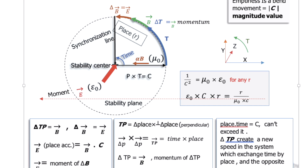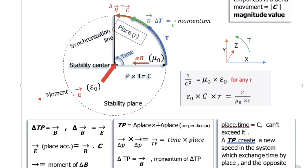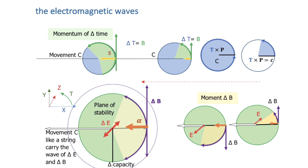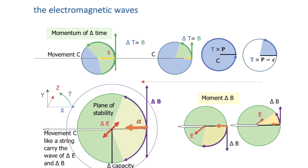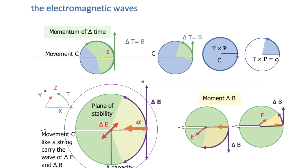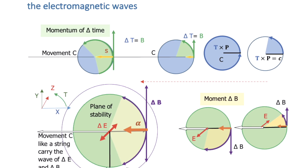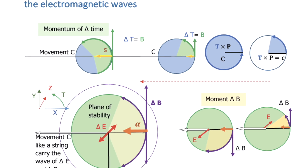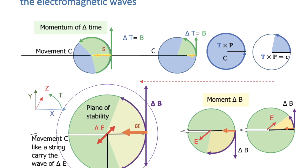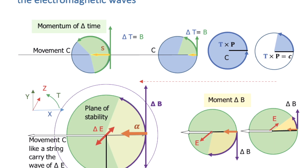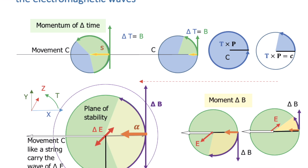Momentum of delta time equals P. When we represent this on C — the emptiness — we draw it as: T multiplied by P, time by place, equals circle C, which is the emptiness. Delta time causes the moment. When delta time completes the full circle — not only part of a circle, but a complete circle — we find delta P, complete and returning again. That is delta P, and delta P will make the electromagnetic wave.